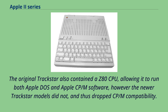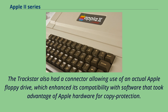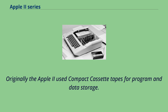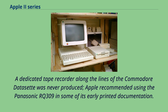The TrackStar had a connector allowing use of an actual Apple floppy drive, which enhanced compatibility with software that took advantage of Apple hardware for copy protection. Originally, the Apple II used compact cassette tapes for program and data storage. A dedicated tape recorder was never produced; Apple recommended using the Panasonic RQ-309 in some of its early printed documentation. The use of common consumer cassette recorders and a standard video monitor or television set made the total cost of owning an Apple II less expensive.